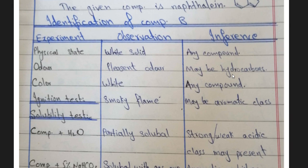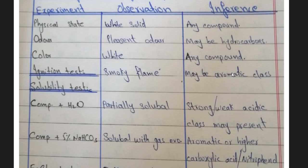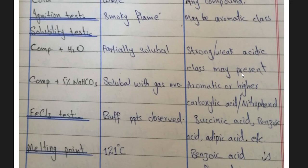Now Component B — we do identification of its components. The physical test: it is a white solid, and the color is white. For the solubility test, add a little compound to water — if it is partially soluble, a strong or weak acid may be present. If we treat the compound with 5% sodium bicarbonate, it will be soluble with gas or effervescence, indicating an aromatic acid or nitrophenol. The FeCl3 test with buff-colored precipitates also gives a result.